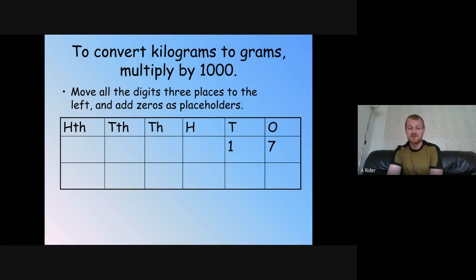Another example: I've got seventeen kilograms to convert to grams. Remember, multiply by one thousand, so each digit moves three place values to the left. The one moves three places to the left into the ten thousands, and the seven moves into the thousands. Use the grid to help you. Hopefully you worked out seventeen thousand grams.